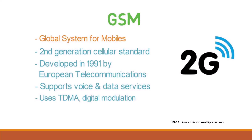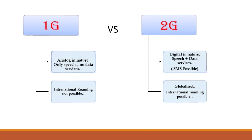Let's see some key differences between first generation and second generation. 1G is analog in nature which provides only speech but not data services. Whereas in 2G, it is digital in nature which can provide both speech as well as data services. In 1G, international roaming is not possible. Whereas 2G is globalized, which means international roaming is possible.